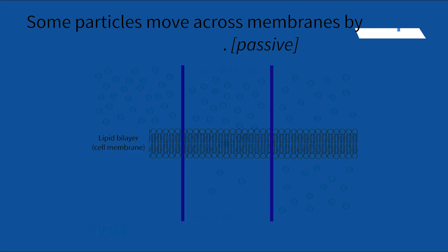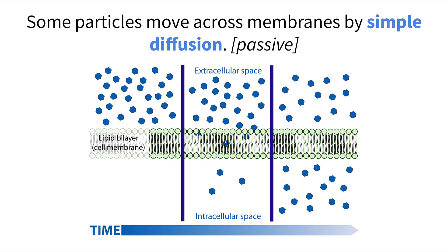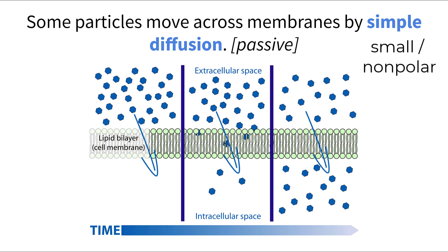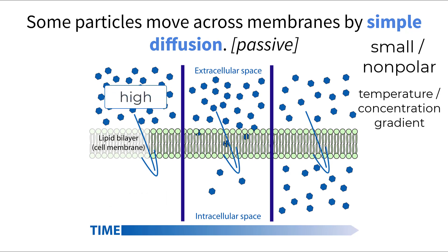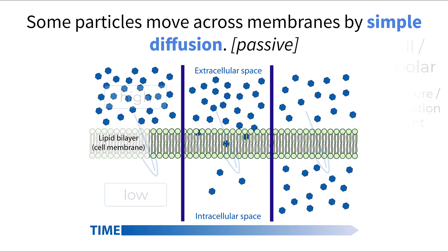Our first example is called simple diffusion, which is when molecules are able to move freely through the membrane without energy and without assistance. This only occurs with small, nonpolar molecules like oxygen and carbon dioxide. The rate of diffusion of these molecules can be impacted by temperature and the severity of the concentration gradient, pushing them either into or out of the cell. Molecules without the use of energy only move from high concentrations to low concentrations, which is the literal definition of diffusion.